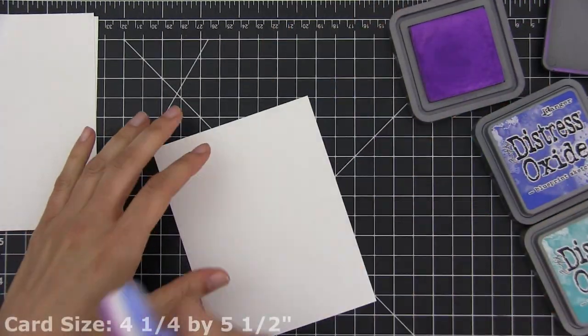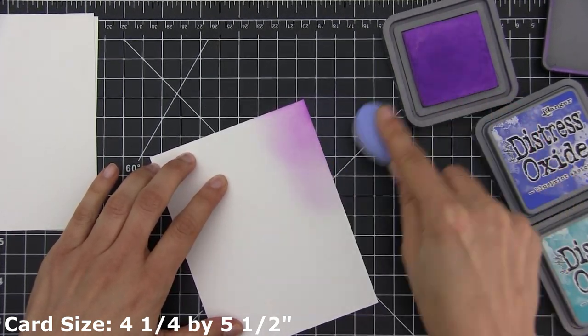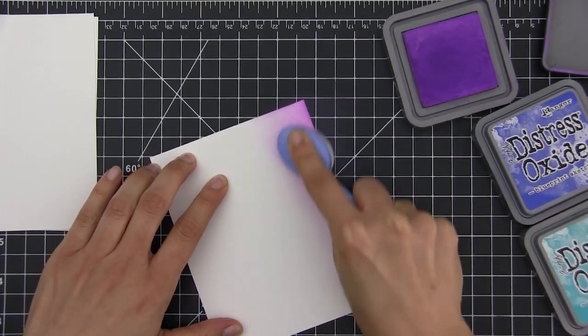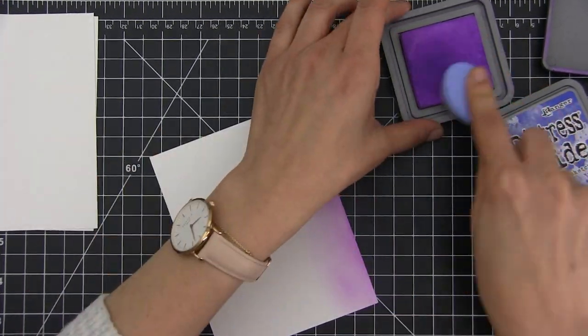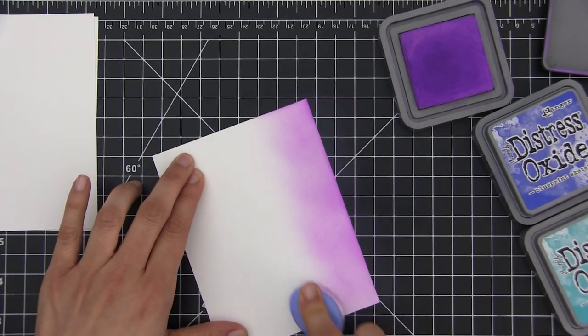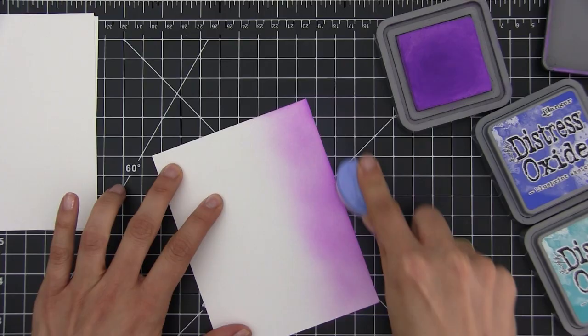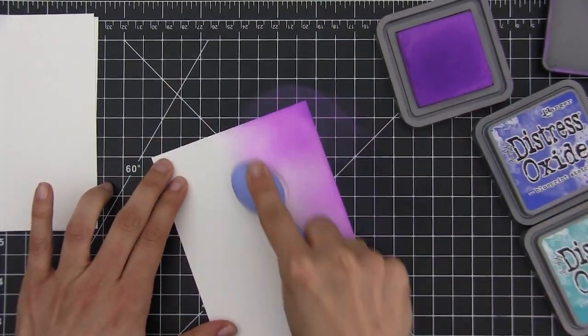So the first thing I'm going to do is apply color to all the panels. I'm going to be making three cards and three different techniques, but they're all going to start at the same place, meaning they're all going to have the same color combination made in the exact same way. This is also a good way to save time when you're trying to make a bunch of cards.